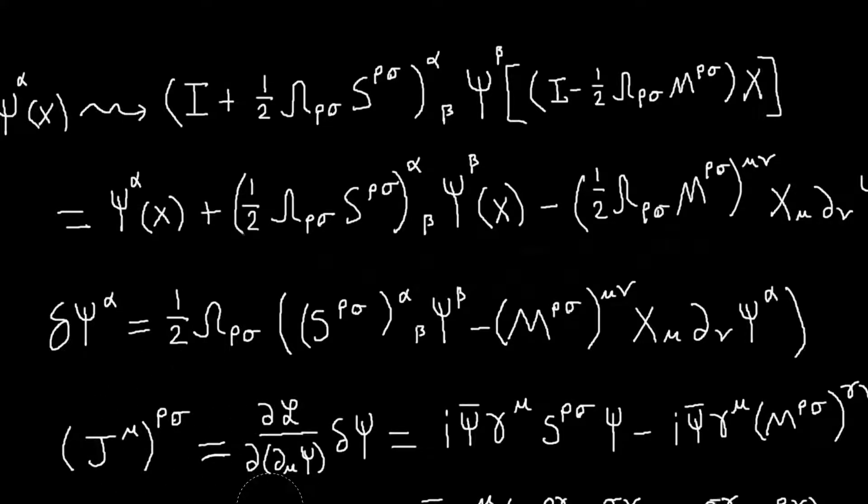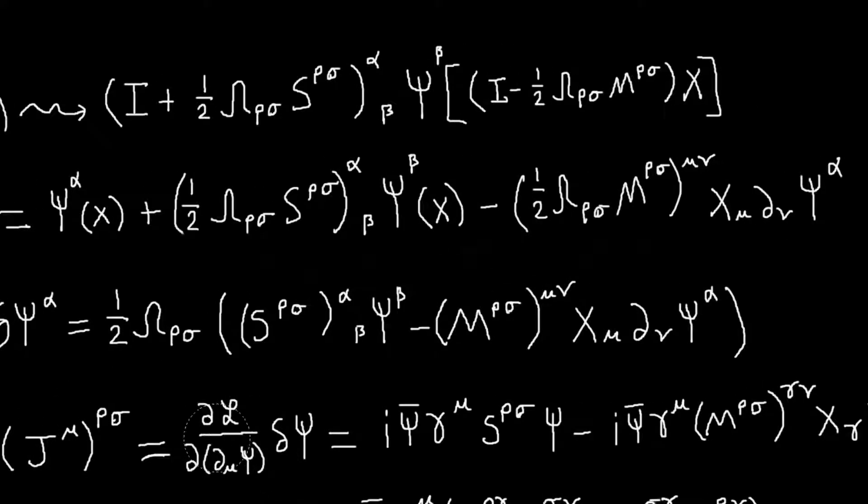So the rho-sigma conserved current quantity will just be dL/d(∂μψ), which is i ψ̄ γμ, or i γμ, i ψ̄ γμ, okay.